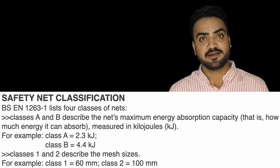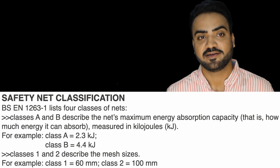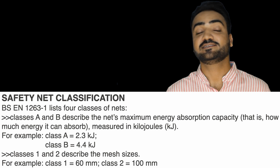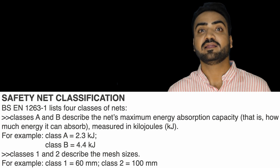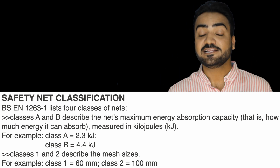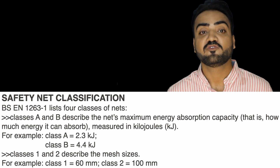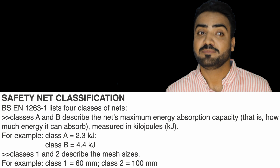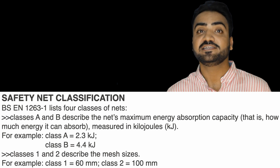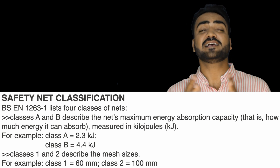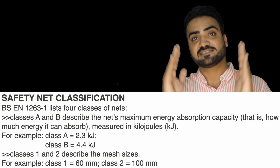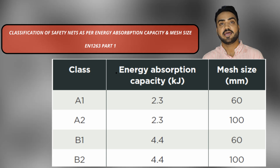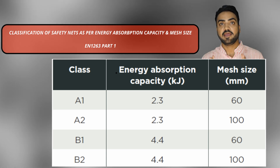BS EN 1263 Part 1 lists four classes of safety net. Classes A and B describe the net's maximum energy absorption capacity — measured in kilojoules. Class A nets have energy absorption of 2.3 kJ, and Class B nets have 4.4 kJ. Classes 1 and 2 describe mesh sizes: Class 1 is 60 mm mesh size, and Class 2 is 100 mm mesh size.